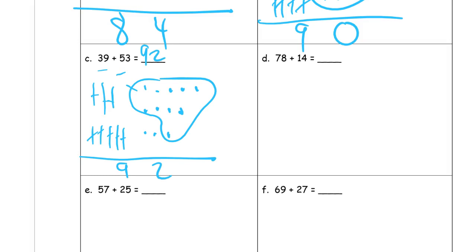78 plus 14. This method usually is pretty popular right from the beginning because you're just drawing pictures of stuff and counting. 78 plus 14 — one, two, three, four, five, six, seven tens. One, two, three, four, five, six — oops, that's a six-group row. I want a five-group row.